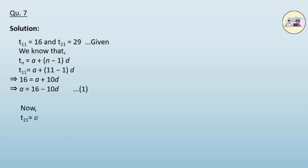Now, for t_21 is equal to a plus 21 minus 1 into d. Now, substituting the value of a from equation 1,